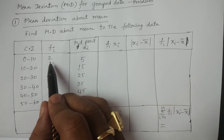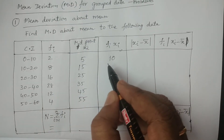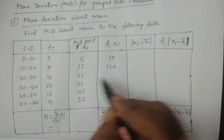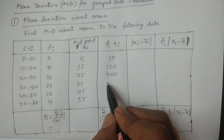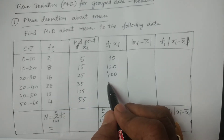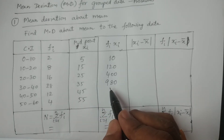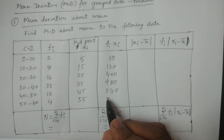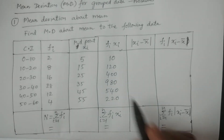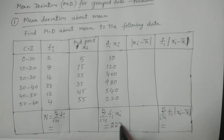Now multiply Fi into Xi: 2×5 = 10, 8×15 = 120, 16×25 = 400, 28×35 = 980, 12×45 = 540, 4×55 = 220. The total summation of Fi·Xi is 2270.